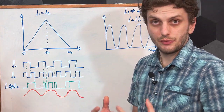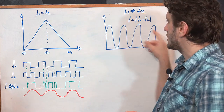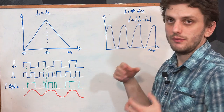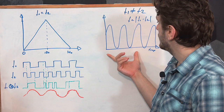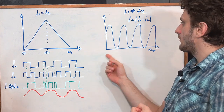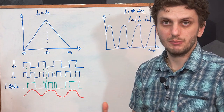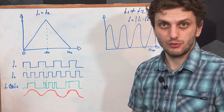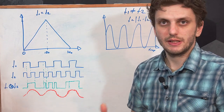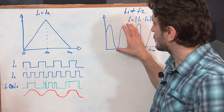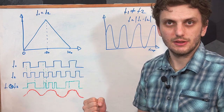So if you pass two signals of different frequencies through a type 1 phase detector, at the output you'll get an oscillation going from minimum to maximum at the frequency equal to the frequency difference of the two input signals. A type 1 phase detector can be implemented either with a logic gate — an exclusive OR — or with an analog signal mixer, such as a Gilbert cell.